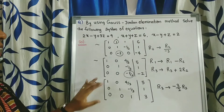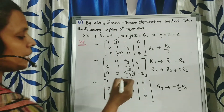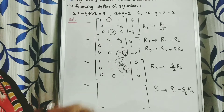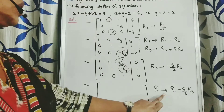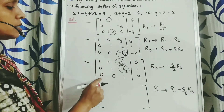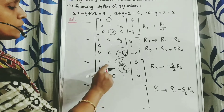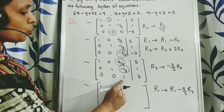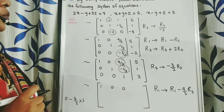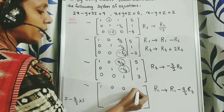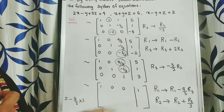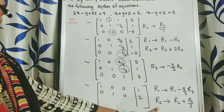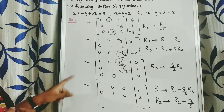Now we convert the remaining off-diagonal entries to 0 to complete the diagonal matrix. Convert 4 by 3 in R1 to 0 using R1 tends to R1 minus 4 by 3 times R3. We get row 1 as: 1, 0, 0, 5 minus 4 equals 1. Next convert negative 1 by 3 in R2 to 0 using R2 tends to R2 plus R3 by 3. We get row 2 as: 0, 1, 0, 2.